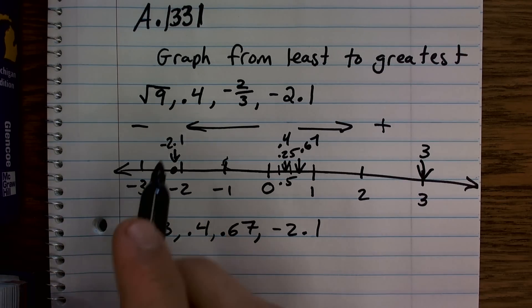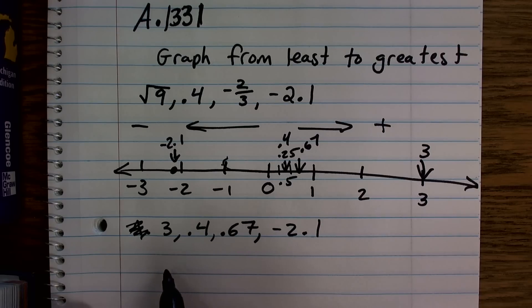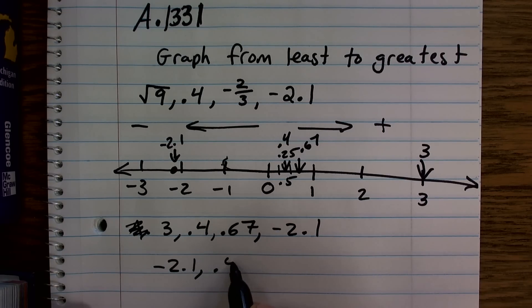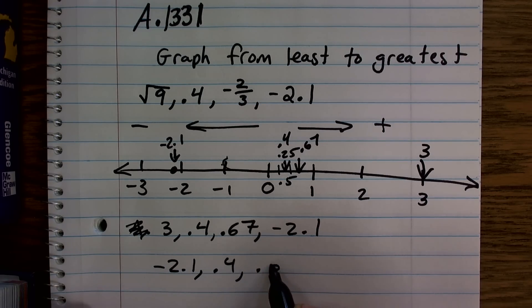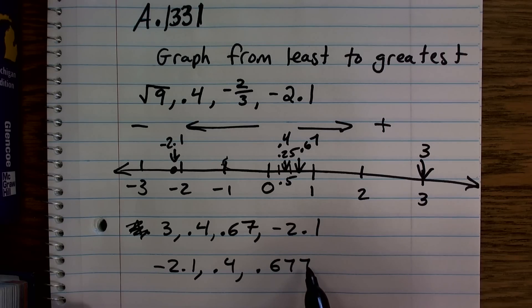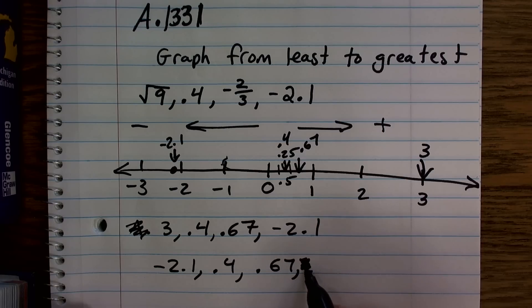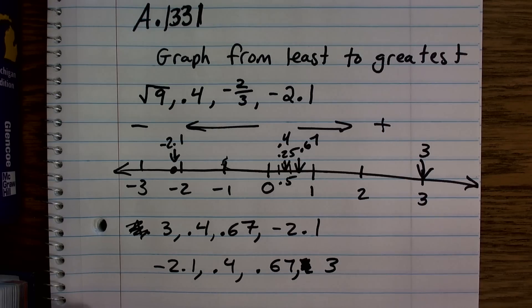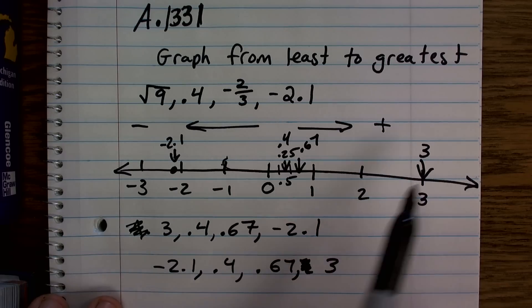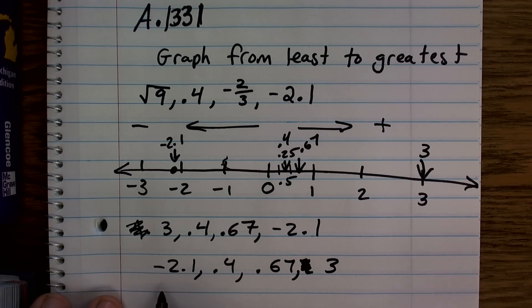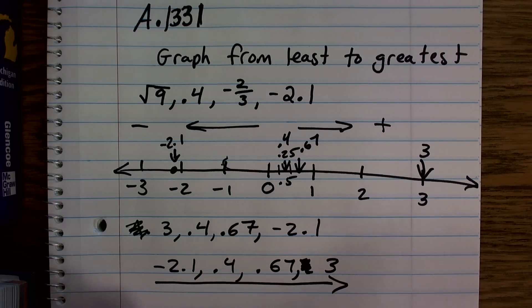So to graph from least to greatest, I'll have negative 2.1, 0.4, 0.67, and 3. So that is them graphed and now organized from least to greatest.